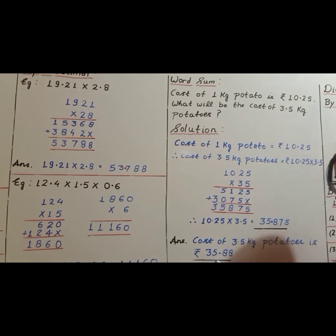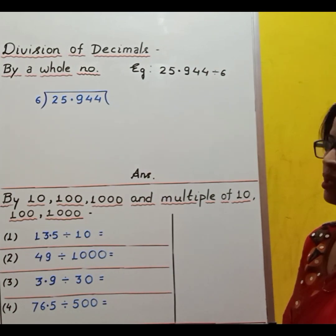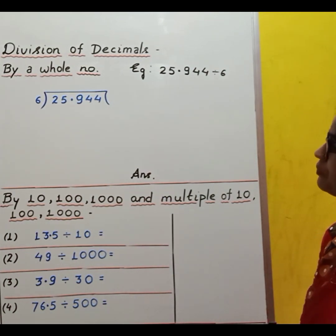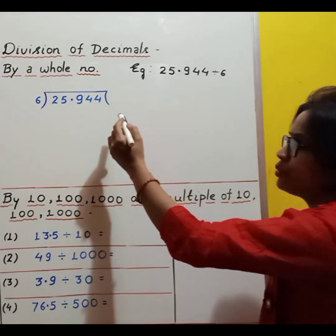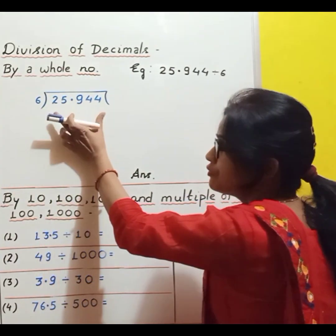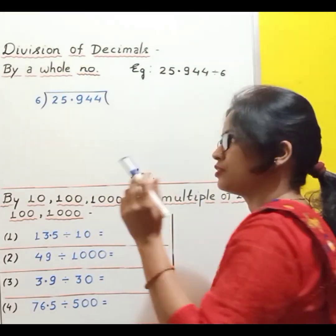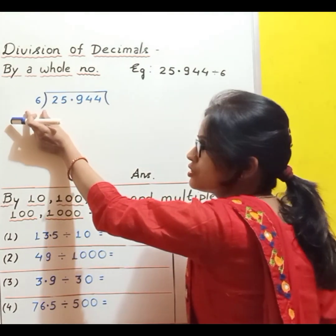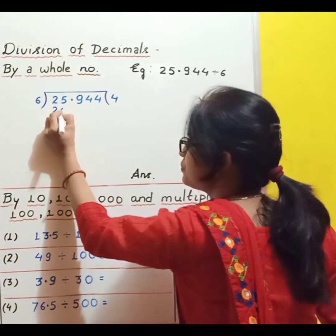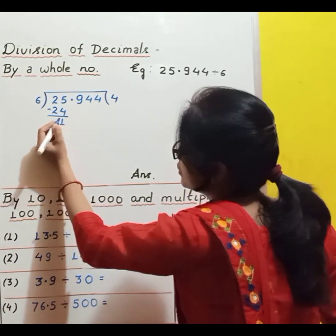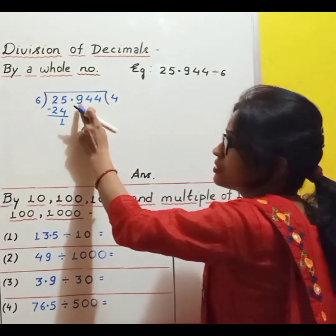Now we have to learn division of decimals. Division of decimals by a whole number. See the example: 25.944 divided by 6. How do we divide a decimal by a whole number? We divide the decimal number as if it is a whole number. Start dividing: read the table of 6 to go into 25 — 6 fours are 24. Now 1 is remaining and we copy the next digit. But as 9 is after the decimal point, before copying that digit we put a decimal point in the quotient.